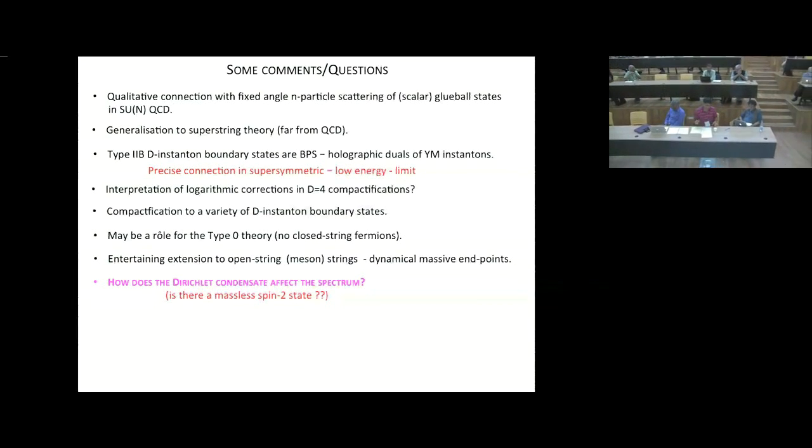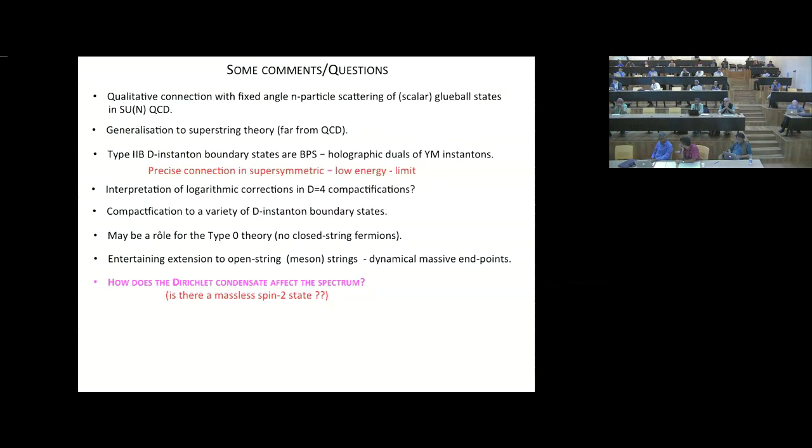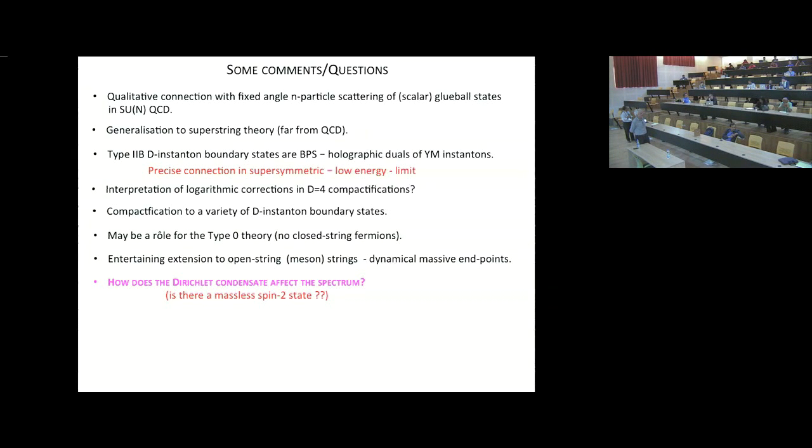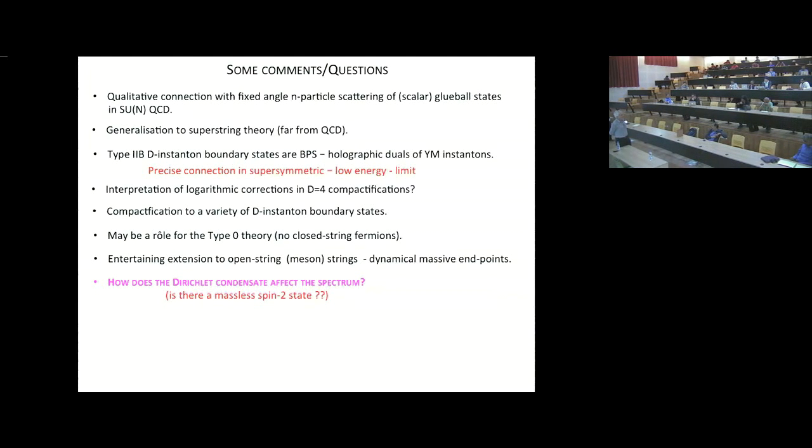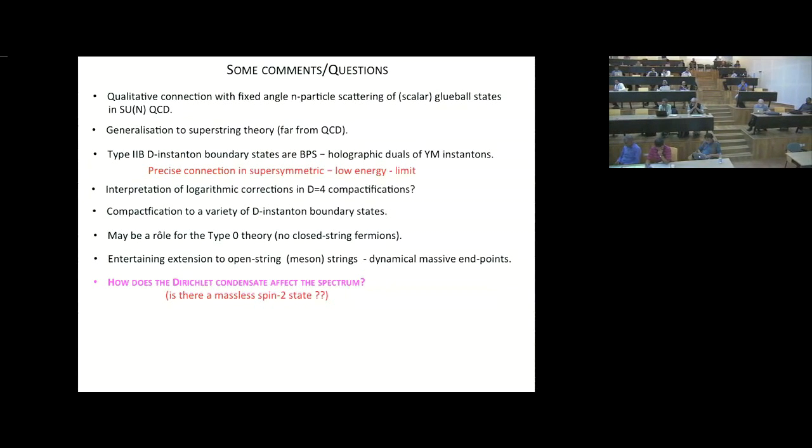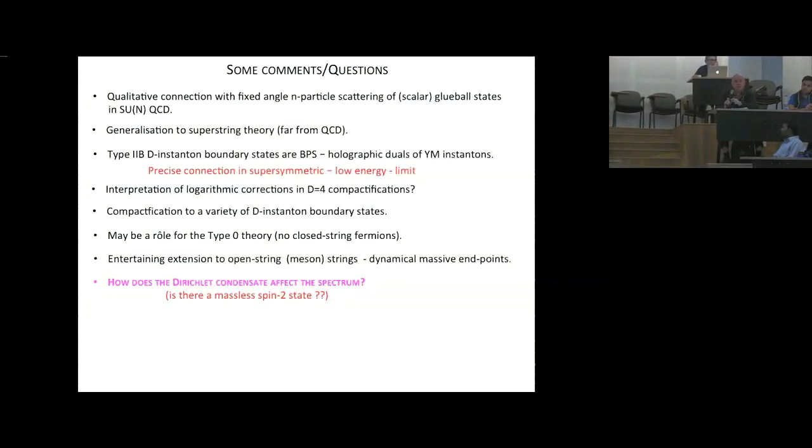Can you make a connection with calculations which were done on form factors in N equals four supersymmetric Yang-Mills over the years using this as a boundary state? No. I'm not sure what the direct connection is. I'm not sure whether the form factors they are looking at are directly analogous to what I wrote down. Were they color-singlet form factors? I think so, yes. They looked at Wilson loops for BPS states. Well, there should be a way in that case to compare them. They looked at BPS state. The trouble is, of course, making a direct comparison with what I said is difficult because I was talking about the bosonic string. In the case of the superstring one can do similar calculations.